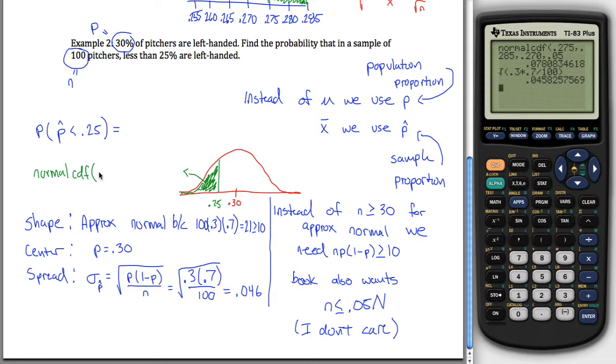Left bound, we don't have a left bound, so put in some large negative number. Maybe negative 9999, that should be plenty large enough negative. The right endpoint is 0.25. The center is 0.30. And the standard deviation is this 0.046. And if we type all that into a calculator, we'll have our answer and we'll be done with this thing.